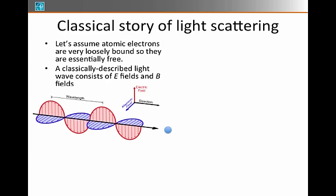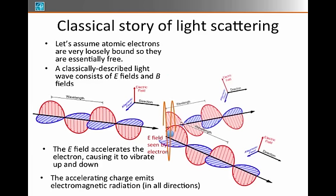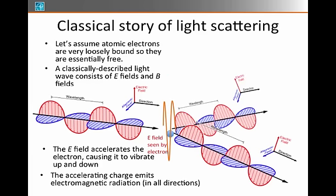Classically, if you shine light or an electric wave at this thing, it consists of E fields and B fields. The electron would see the E field from the traveling wave and start jiggling up and down because of that electric field accelerating it up and down. The accelerating charge itself emits electromagnetic radiation in all different directions—that's because an accelerating charge is known to emit electromagnetic waves.